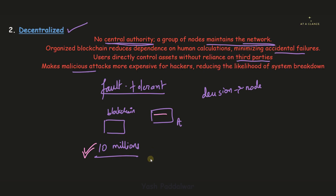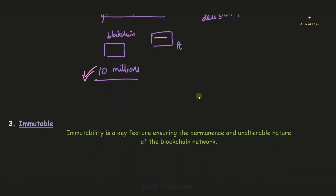If only one single ledger is changed, the blockchain network is intelligent enough to detect that malicious activity and it won't be allowed. That is why even a small malicious attack would be extremely expensive and computationally time-consuming for the hacker to execute. So the decentralized nature as a feature of blockchain technology is clear — let's move on to the next feature.